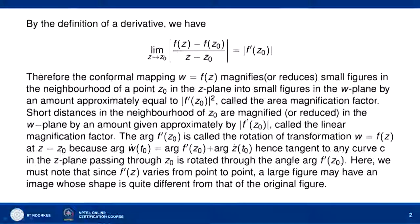Hello friends, welcome to my second lecture on conformal mapping. By the definition of derivative, the limit as z tends to z0 of |f(z) - f(z0)| / |z - z0| equals |f'(z0)|. Therefore, when z is very close to z0, |f(z) - f(z0)| equals |f'(z0)| · |z - z0|.